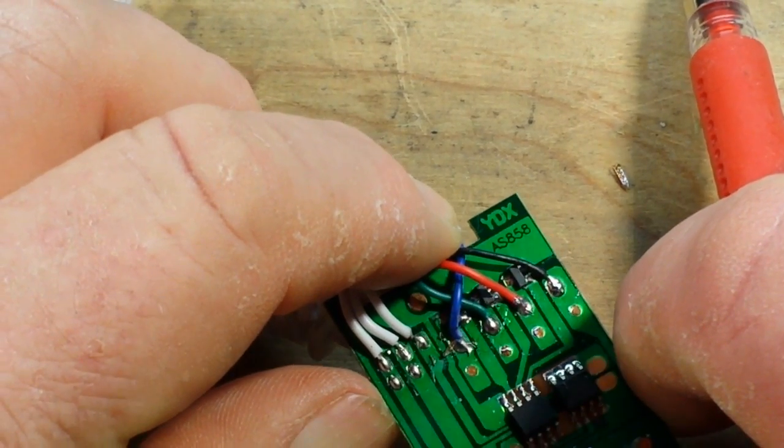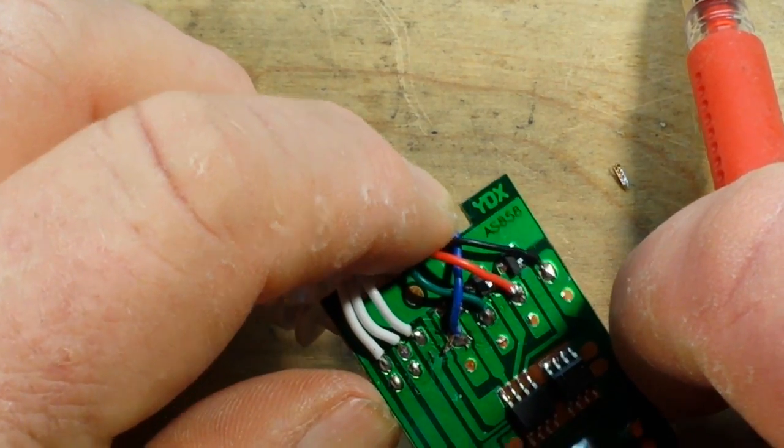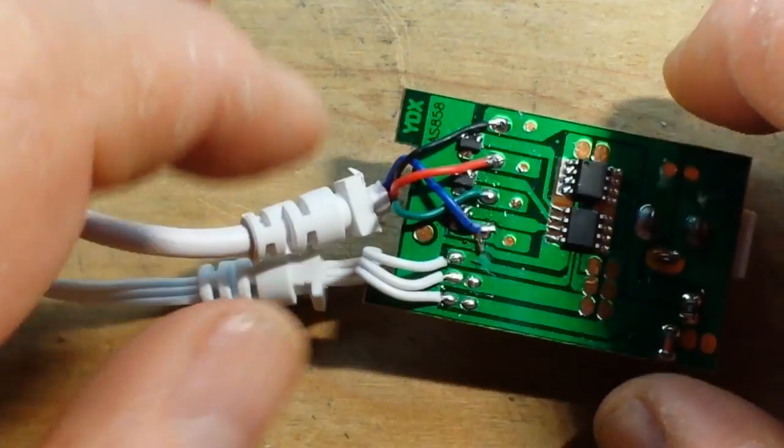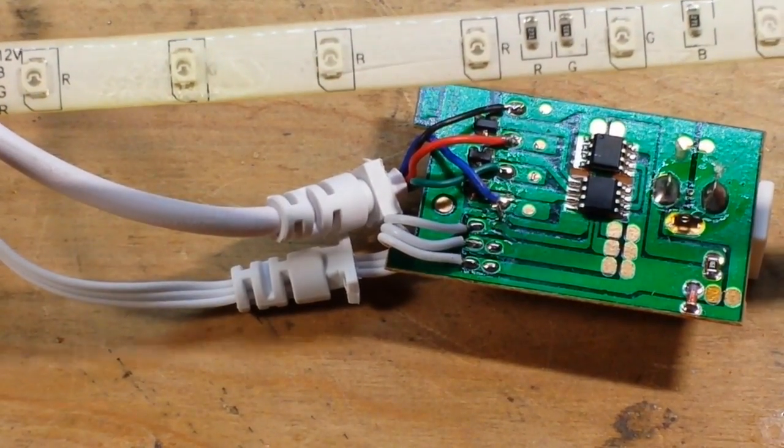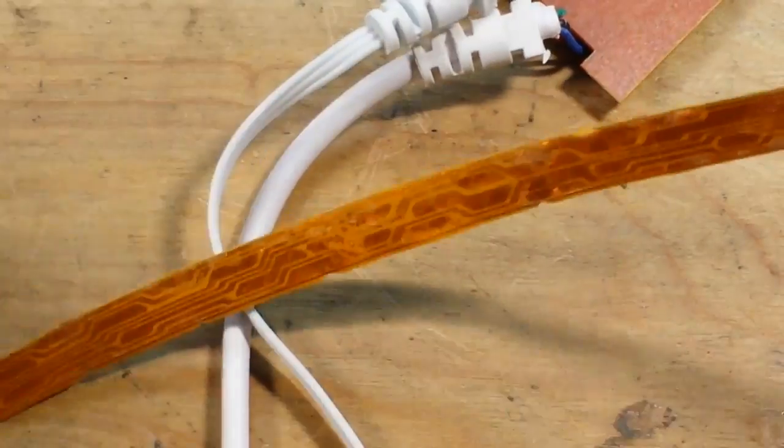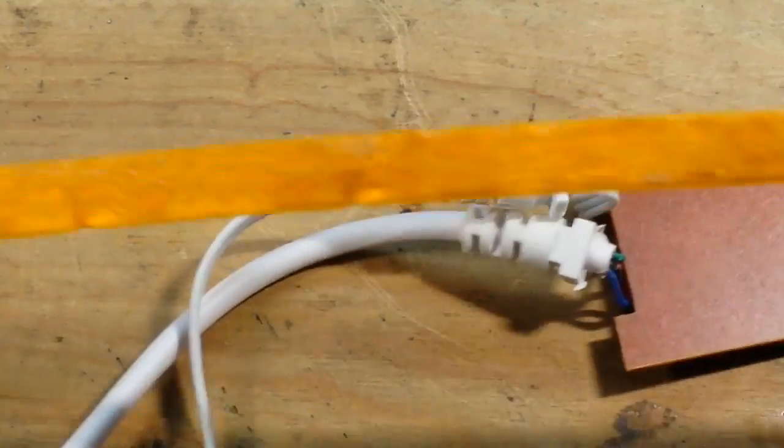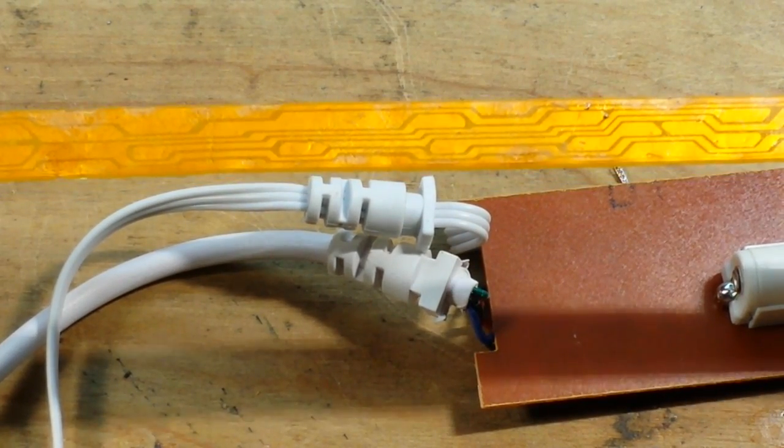YDX, what's that say? 5858, that's the board. I got about 10 meters of this stuff. This was all sold as a kit. Let me take a look. There we can see the back side of it, how everything is wired together. Kind of interesting.